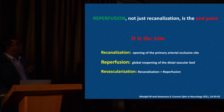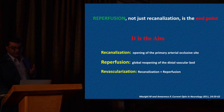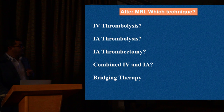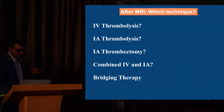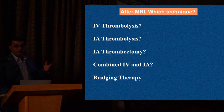What we want is reperfusion — it's not just recanalization. The endpoint involves recanalization, which is opening the primary arterial occlusion, and reperfusion, which is re-opening of the distal vascular bed, and revascularization — recanalization plus reperfusion together. After diagnosis, the question is always: what to do? IV thrombolysis alone, intra-arterial thrombolysis, intra-arterial thrombectomy, combined intra-arterial plus IV thrombolysis, or bridging therapy — starting with IV thrombolysis and waiting 20 minutes; if no improvement, proceeding directly to mechanical thrombectomy.